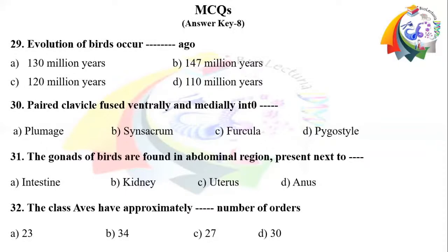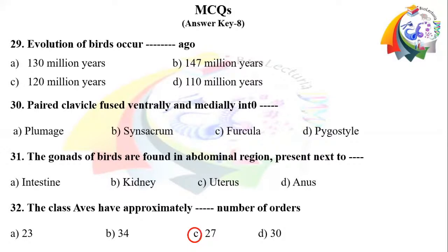Answers: Question 29 right option B — evolution of birds occurred 147 million years ago. Question 30 right option C — paired clavicles fused ventrally and medially into furcula; furcula is also called the wishbone of birds and plays an important role in bird flight because of its elasticity. Question 31 right option B — gonads of birds are found in the abdominal region present next to the kidney. Question 32 right option C — class Aves has approximately 27 orders.